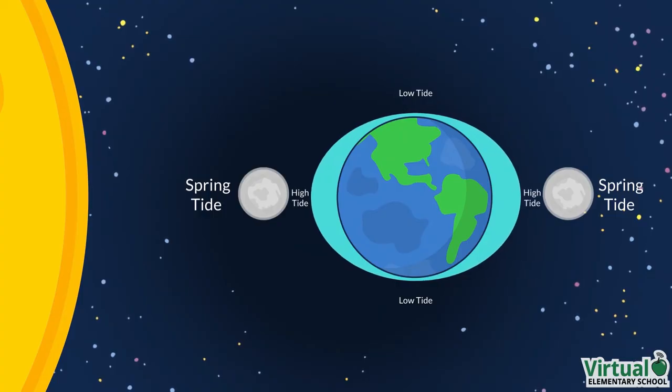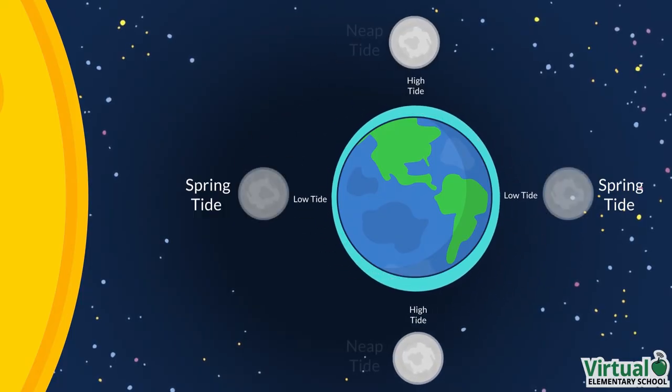This creates the highest high tide and the lowest low tide, or the largest tidal range. Neap tide occurs during the smallest tidal range. This is when the Moon is at the first and third quarter phases.